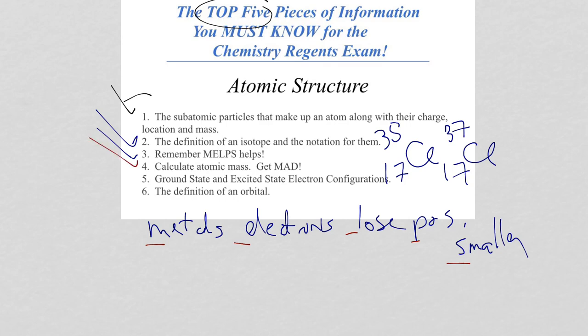For number four, calculating atomic mass. This shows up, I can pretty much guarantee you, every Regents exam. An atomic mass is what we call a weighted average, where I'm not just taking the different masses of the isotopes, adding them together, and dividing by a number. I need to take into account percents.